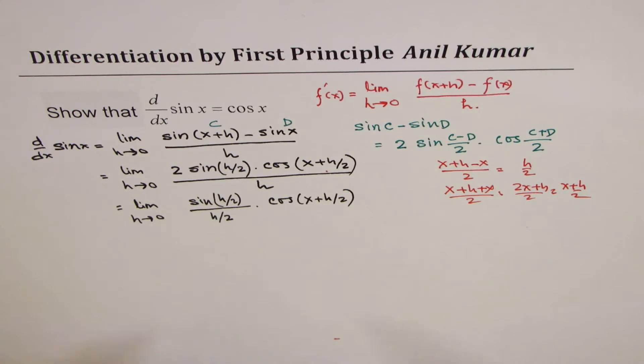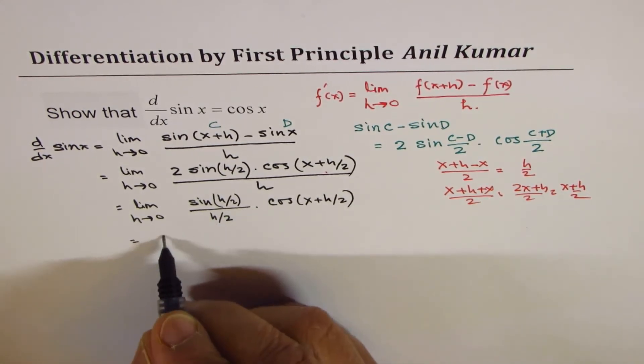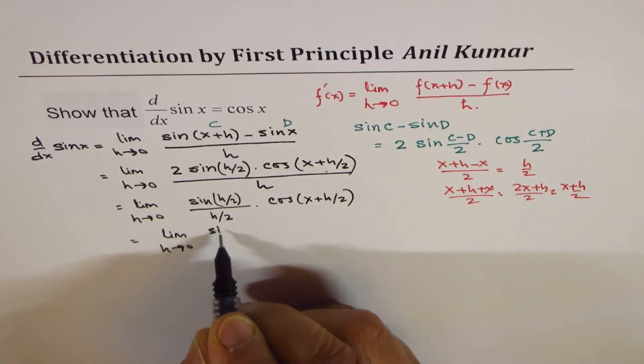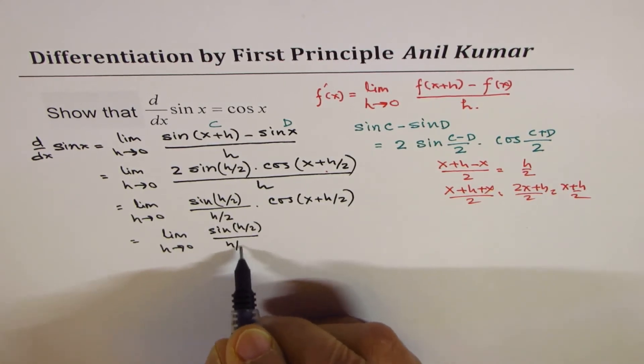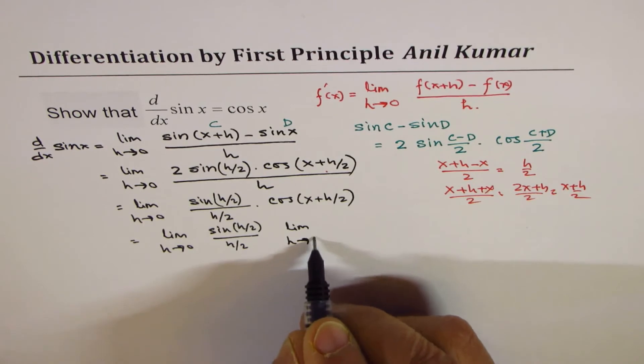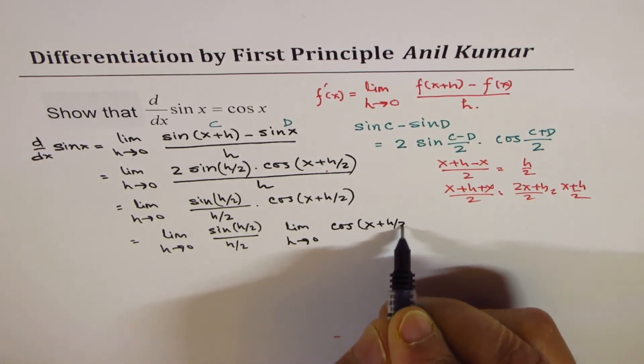Now, this limit is 1. So we could write this as limit h approaches 0 for sine h by 2 over h by 2, which is 1, times limit h approaches 0 for cos x plus h by 2.